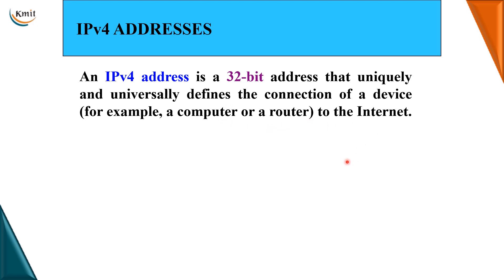Any device wanting to connect to the internet requires an IP address. That is the requirement — we are not connected locally, we are connected globally. So if you want to be connected globally, you need to have an IP address, and it should be unique. Unique means no two systems should have the same IP address. Universal means the address should be acceptable globally, on any network.